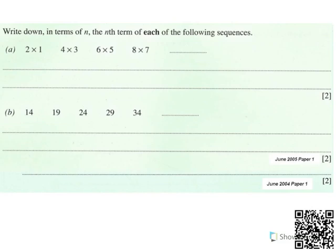You can often find GCSE sequence questions which look like this, where there's a multiplication. Your answer will be a multiplication — you will get two numbers like that. Often pupils will just write a single number at the end. This question looks a lot more difficult, but really all it is is two sequences combined.